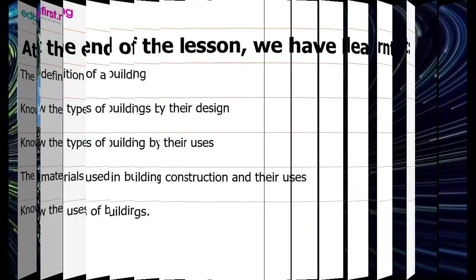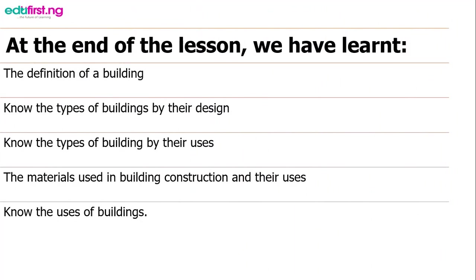We have come to the end of this lesson. Before we go, let's look at what we have learned. We have been able to define a building, know the types of building by their design, and likewise the types of building by their uses. We have also been able to know the materials commonly used in building construction and their uses, as well as the uses of building such as shelter and other things. With this understanding, let's quickly answer some questions.